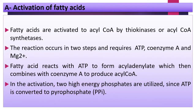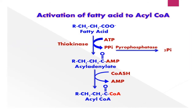Step 1: Activation of fatty acid. Fatty acids are activated to acyl-CoA by thiokinase, or acyl-CoA synthetase enzyme. The reaction occurs in two steps and requires ATP, coenzyme A, and a metal activator like magnesium ion. Fatty acid reacts with ATP in the presence of thiokinase enzyme to form acyl-adenylate, which then combines with coenzyme A to produce acyl-CoA. For the activation of fatty acid, two high-energy phosphates are utilized since ATP is converted to pyrophosphate.